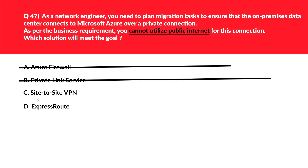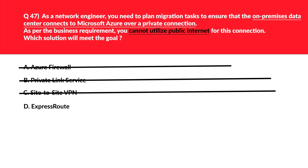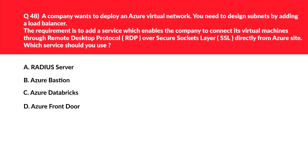Option C says site-to-site VPN. Site-to-site VPN utilizes a public internet connection, which we don't want because the question specifies we cannot utilize the public internet. Therefore option C is an incorrect choice. We are left with option D — ExpressRoute. ExpressRoute provides dedicated connectivity from on-premises to cloud without using the public internet, making it a perfect fit for the question. We'll lock this as the correct answer.